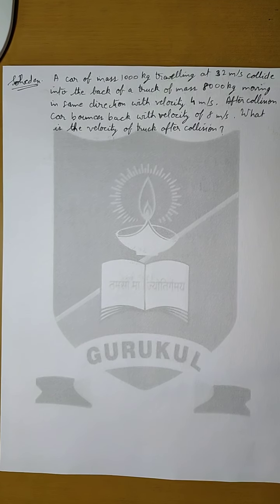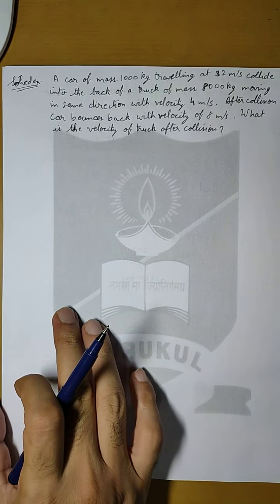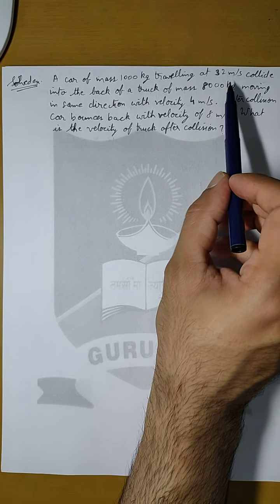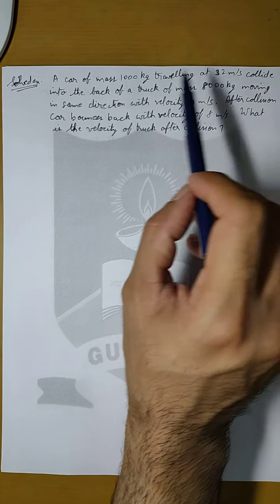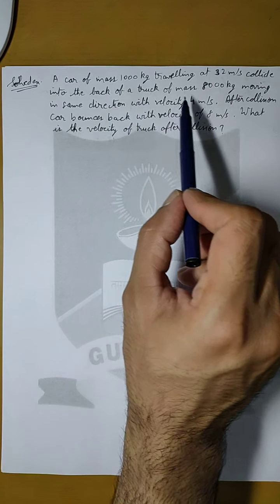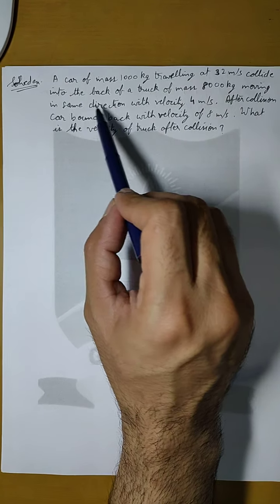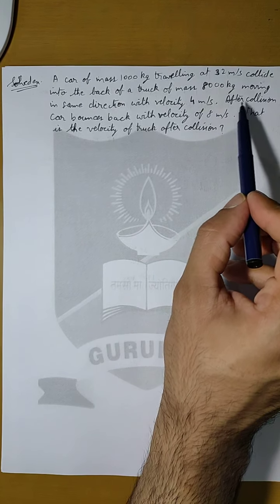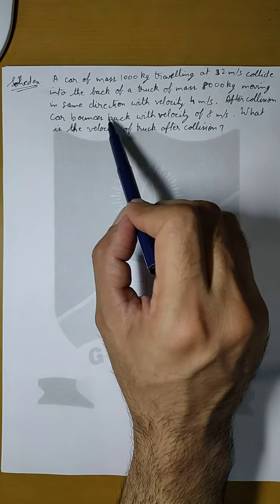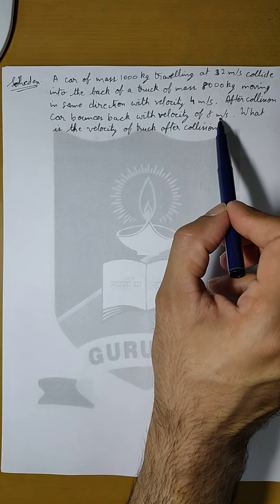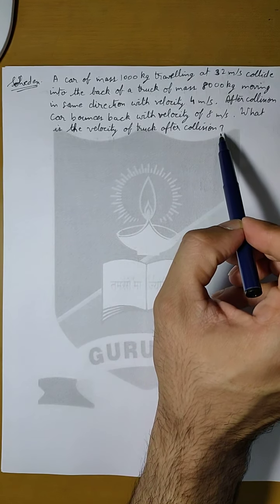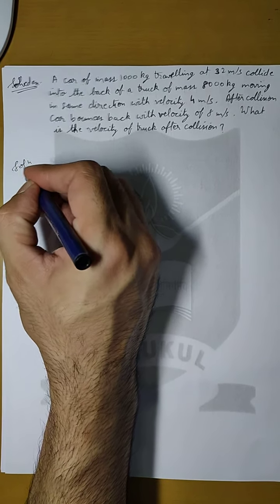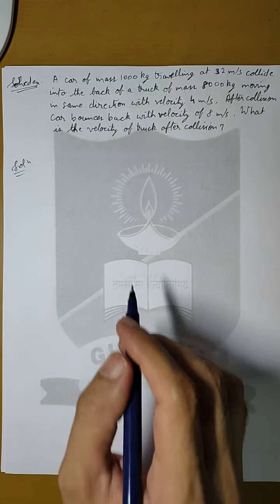Let us do another solved example. We have a car of mass 1000 kg traveling at 32 meters per second. It collides into the back of a truck of mass 8000 kg moving in the same direction with velocity 4 meters per second. After the collision, the car bounces back with a velocity of 8 meters per second. What is the velocity of the truck after the collision? First, let us make a diagram to understand the situation.